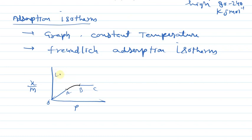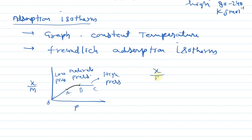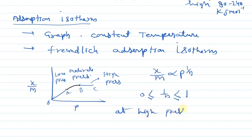The OA part is called the low pressure zone, the AB part which is the curved part is the moderate pressure zone, and the BC part is the high pressure zone. Freundlich has given an equation: x/m is proportional to P to the power 1/n, where 1/n lies between 0 and 1. At high pressure zone, the value of 1/n is 0, meaning x/m is proportional to P to the power 0, so x/m is independent of pressure.